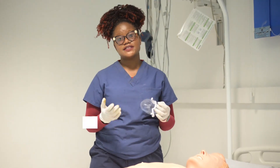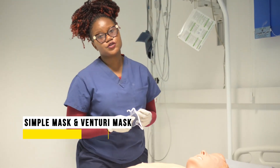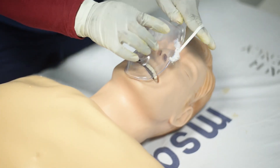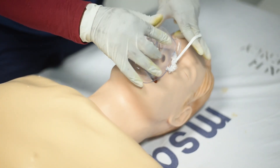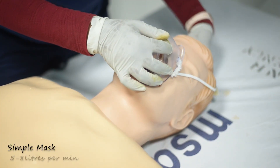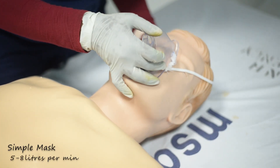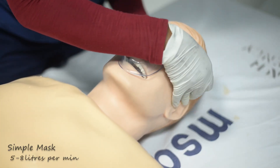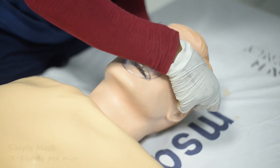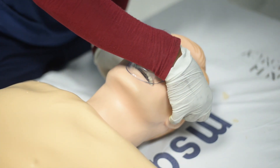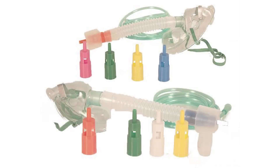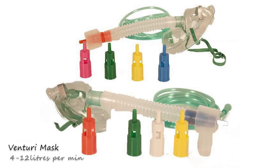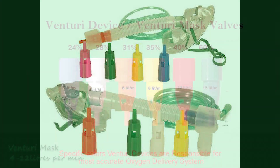Next, we'll talk about a simple mask and a venturi mask. A simple mask is ideal for short-term use and delivers 5 to 8 liters of oxygen per minute. A venturi mask is a high-flow oxygen device delivering 4 to 12 liters per minute of oxygen flow.